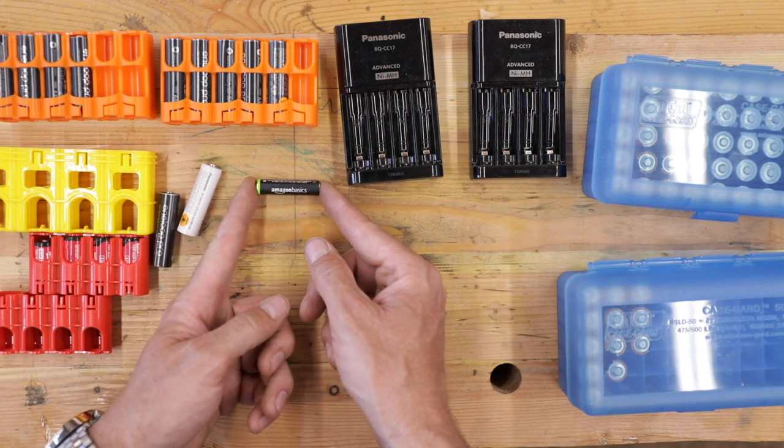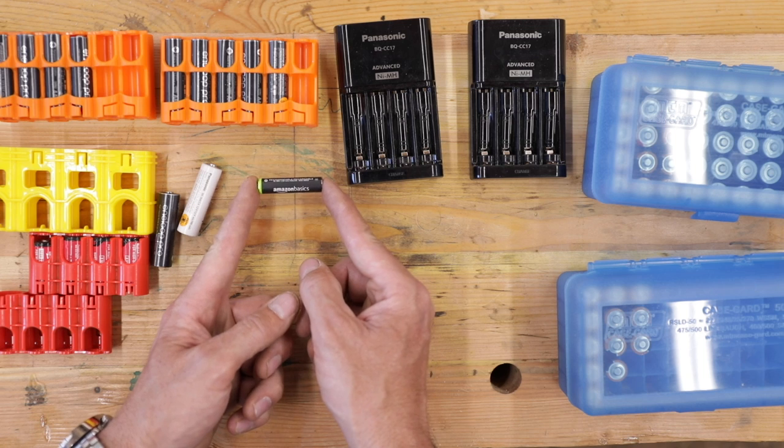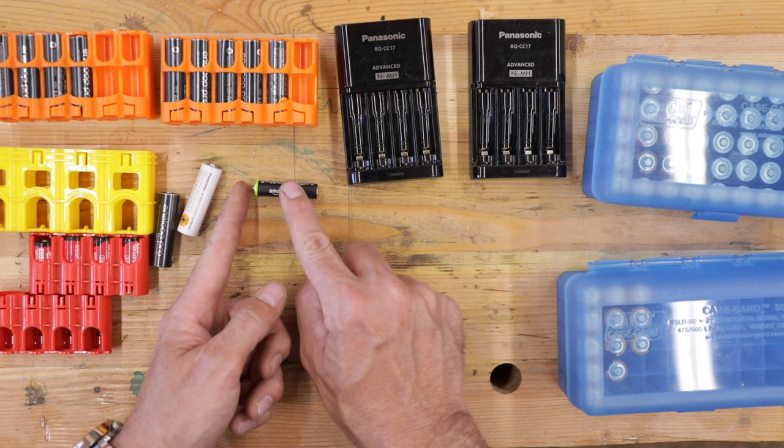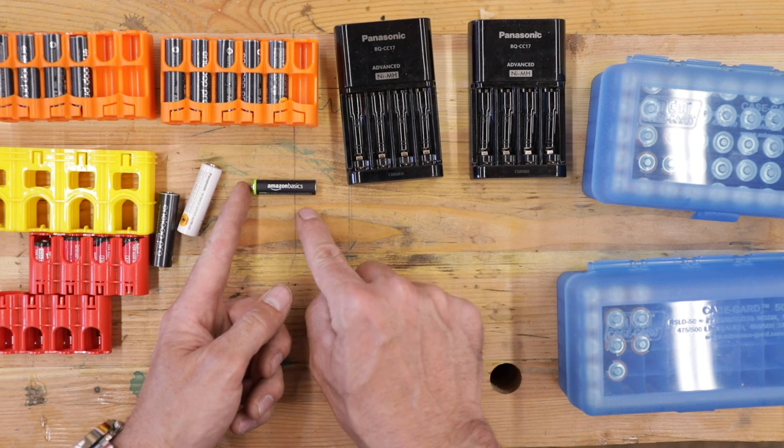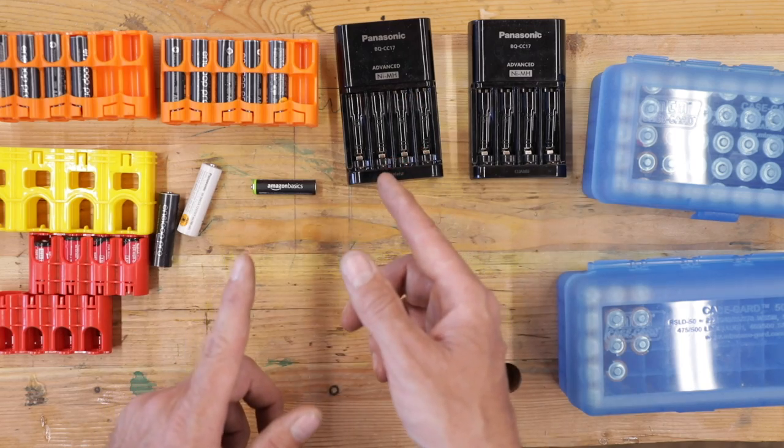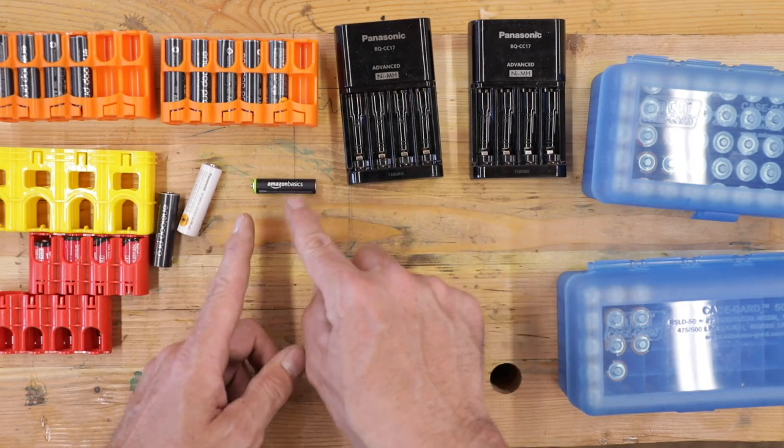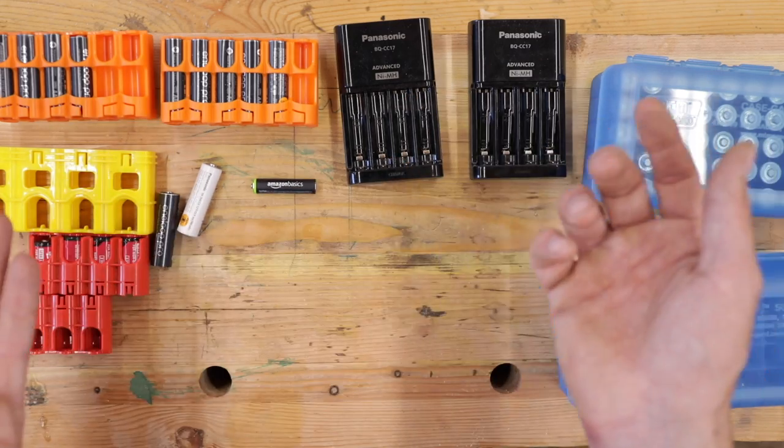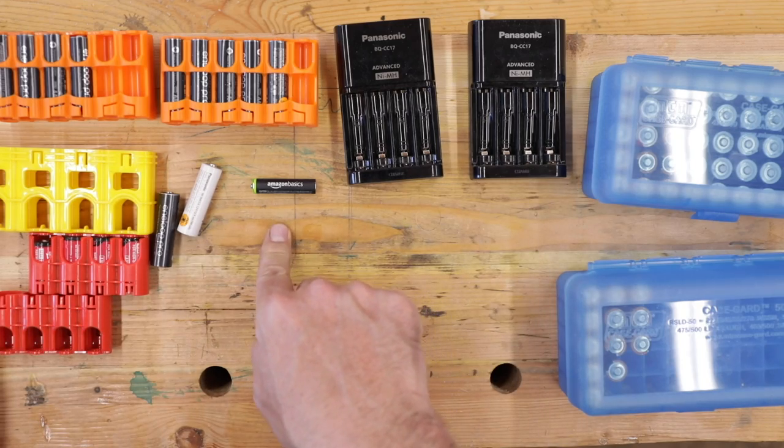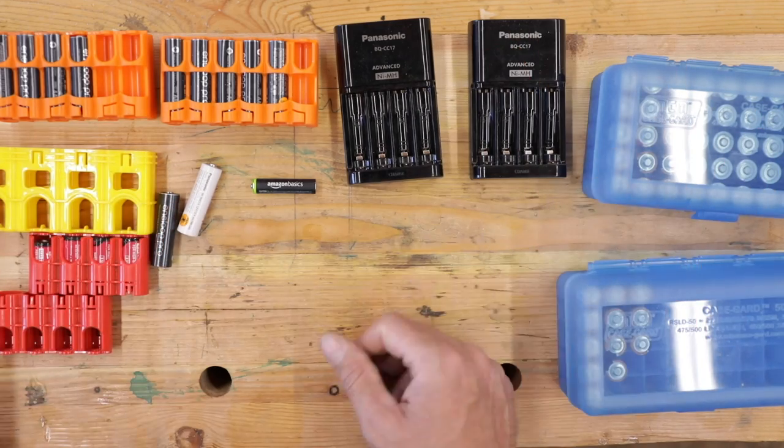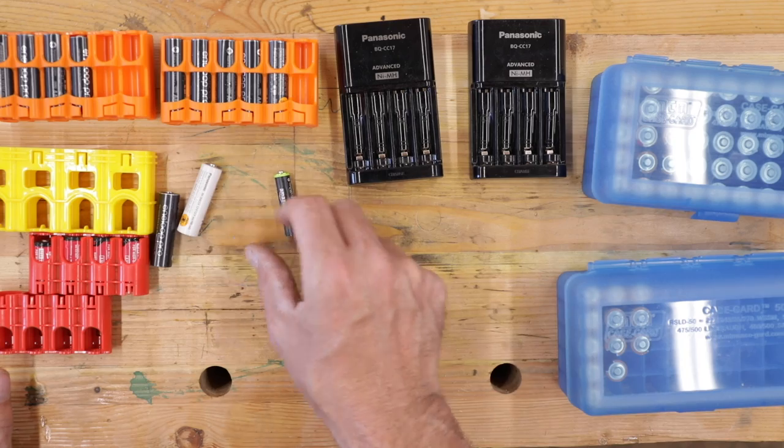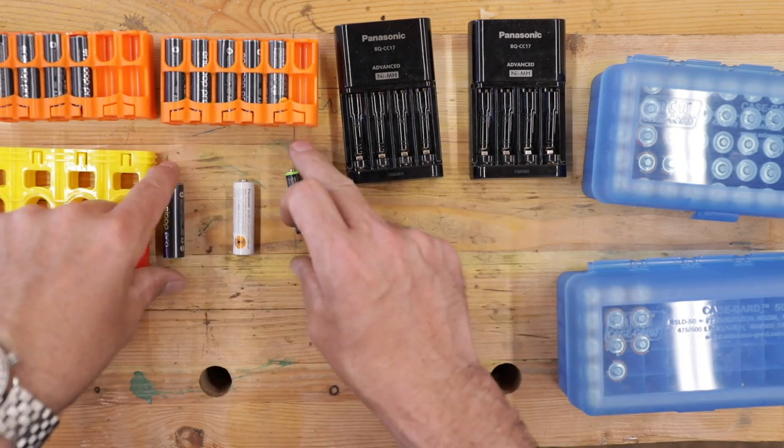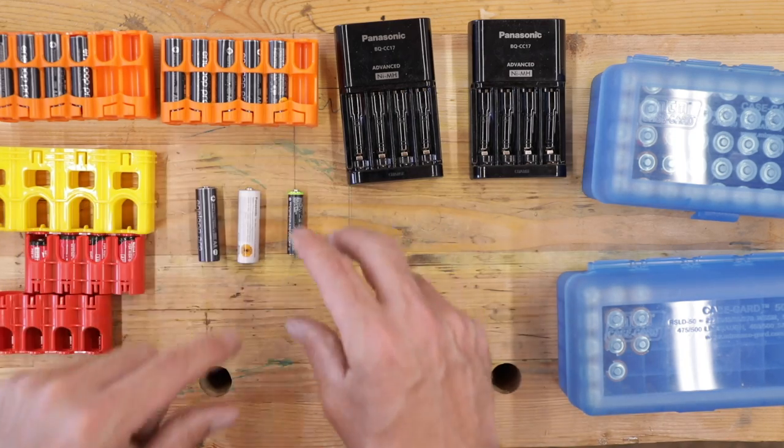So which one do you want to get? Well, you want to get the Amazon Basics. There's one caveat though, and I don't, this isn't scientific, but I do have this gut feeling. They come in two colors. There's a black one and a white one. The white ones seem to last longer. Get the white ones because the black ones don't seem to last as long. It's just been my experience, and I use a ton of these.